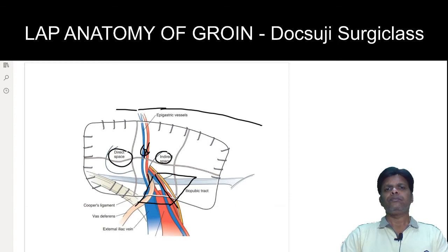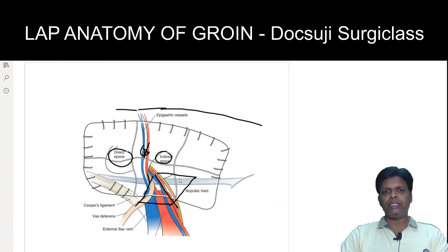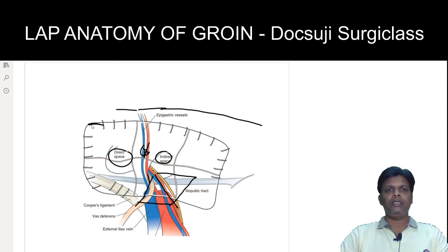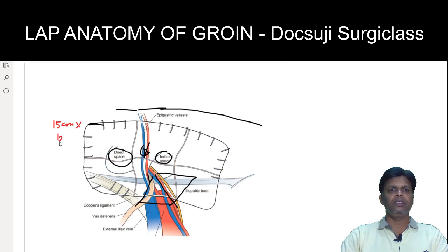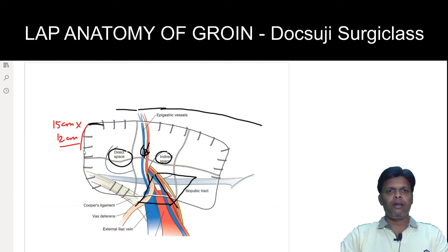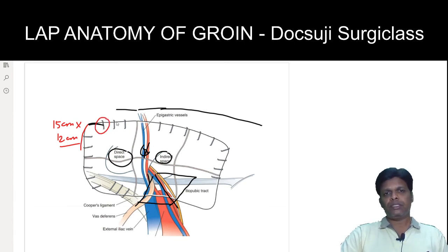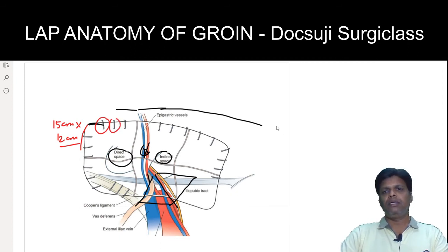After completing this dissection around the triangle of pain and triangle of doom, a mesh is placed in the pre-peritoneal space. The ideal mesh size for this location is a minimum of 15 × 12 centimeters. This mesh must be fixed with staples or a device called a tacker, which is a metallic coil spring that holds the mesh in position.